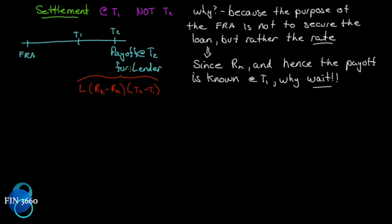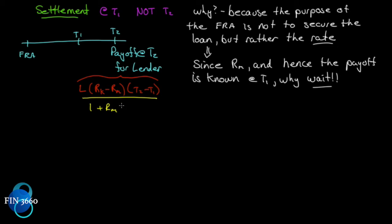The settlement is at t1, not t2, so we must discount the t2 payoff backwards to t1. The discount rate is the market rate rm, and the period is t2 minus t1. If that's one year, we divide by one plus rm. So if rm is 2%, we divide the payoff by 1.02, which brings it back one year.